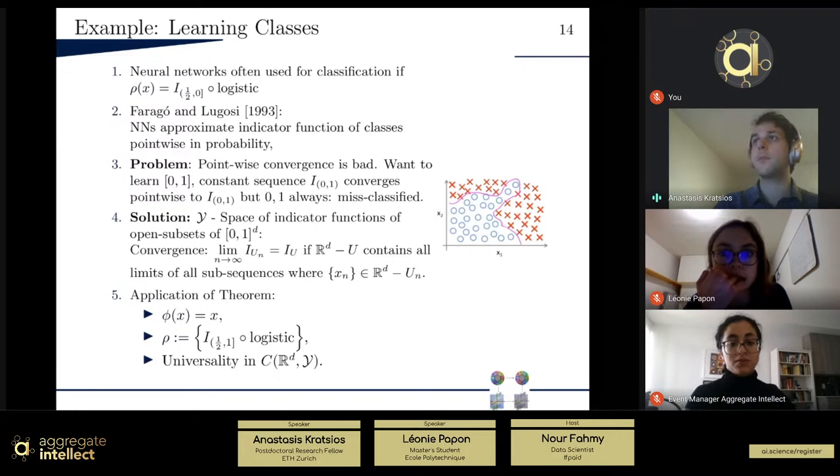Well, one classic way is you modify the output of the neural network with certain practice. So, it's just a varied classification, binary. So, you plot the logistic map, and you interpret this as sort of probability between zero and one, and then you threshold. So, then, in 1993, Farago and Lugosi basically proved that if you sort of endow this problem with sort of a latent probabilistic structure, then of high probability, you can approximate the indicator functional tells you if you're in or not in the class point-wise in probability. It's a rather weak sense.